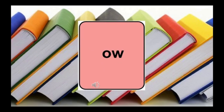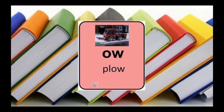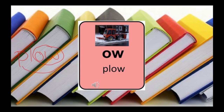The next combination is OW, which will have a very similar sound to the last pattern. OW, plow, OW. Notice how this OW is different from our last OW. Last time we had OW for snow. This time we have OW for plow — it makes a very different sound. It's still the double vowel sound, but in this case the OW says OW.